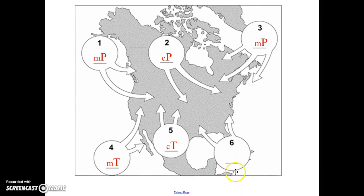And air mass number six is forming over the Gulf of Mexico or the Atlantic Ocean. And that is going to be wet and warm, maritime tropical.